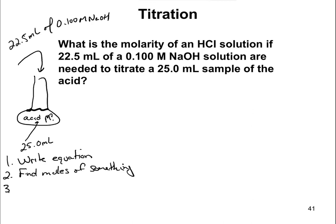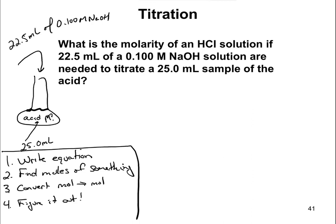Step three is going to be convert moles to moles. Once you figure out how many moles of something you have, you're going to do a mole-to-mole conversion to figure out the moles of something else — whatever you don't know. The last step is going to be figure it out. Once you get to that last step, there's going to be one more conversion depending on what is asked. In this case, it asks for molarity, which means moles per liter, so we're going to divide by the liters to get to molarity.